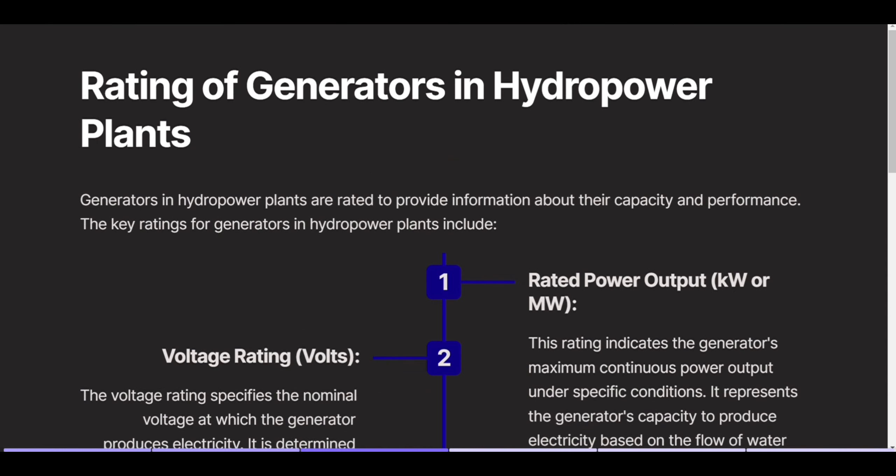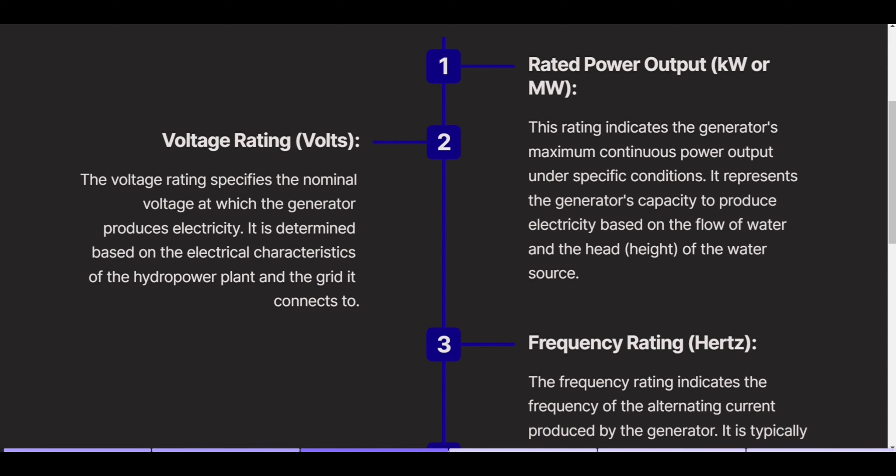Rating of generators in hydropower plants. Generators in hydropower plants are rated to provide information about their capacity and performance. The key ratings include rated power output, which indicates the generator's maximum continuous power output under specific conditions. It represents the generator's capacity to produce electricity based on the flow of water and the head of the water source.